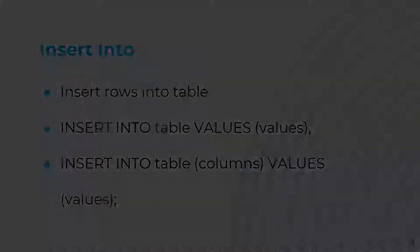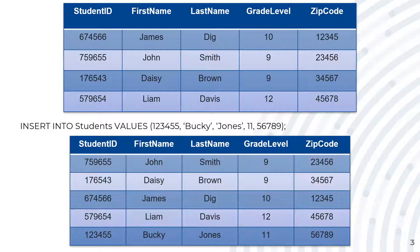Let's look at some examples. Let's say a new student got added to the school and he is an 11th grader. The way the school would add him to the database is by using an INSERT INTO statement such as this one: INSERT INTO students, then using the keyword VALUES followed with the information from left to right, the same way as it is in the table.